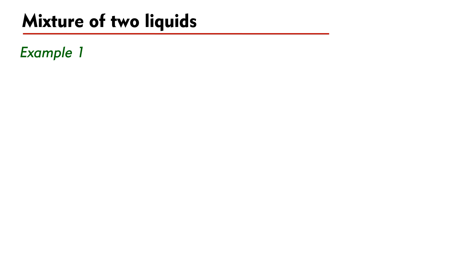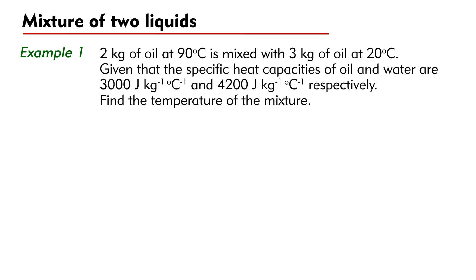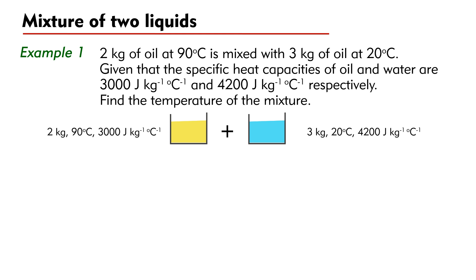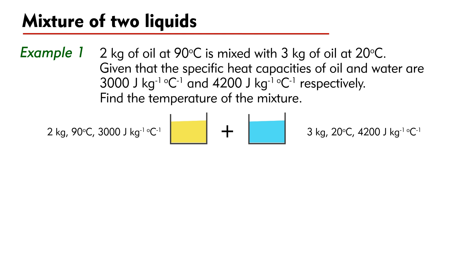Let's look at a numerical example. Example 1: 2 kg of oil at 90 degrees Celsius is mixed with 3 kg of water at 20 degrees Celsius. Given that the specific heat capacities of oil and water are 3000 Joules per kilogram per degree Celsius and 4200 Joules per kilogram per degree Celsius respectively, find the temperature of the mixture.